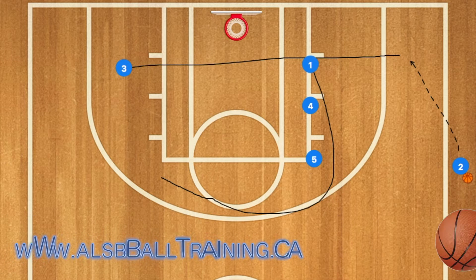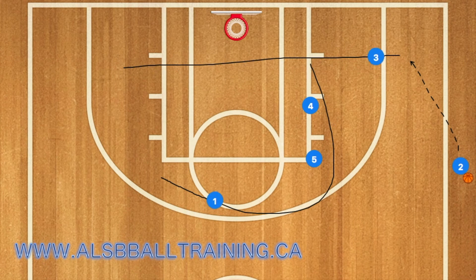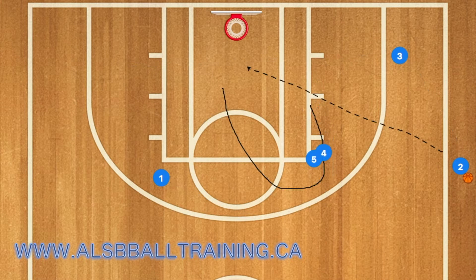Hello basketball coaches. In this play, one will use four and five as a screen, and three will cut across the key and out to the right wing. Three may be open for a three-point shot.